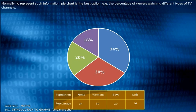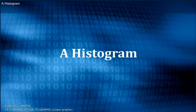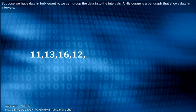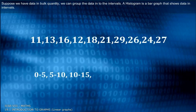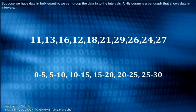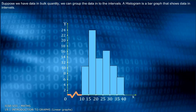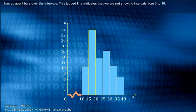A histogram. Suppose we have data in bulk quantity. We can group the data into intervals. A histogram is a bar graph that shows data in intervals. It has adjacent bars over the intervals.